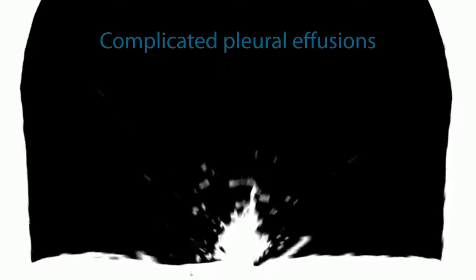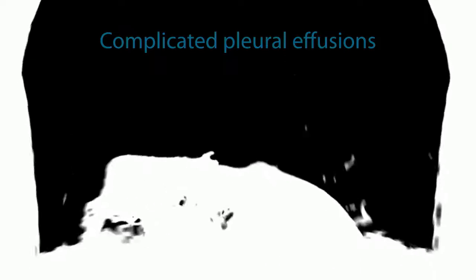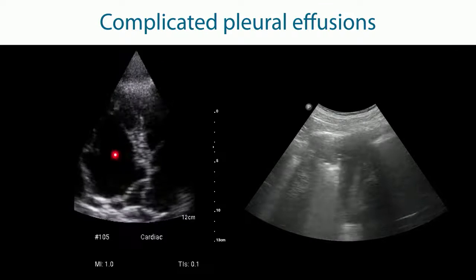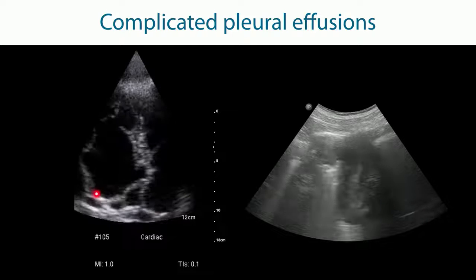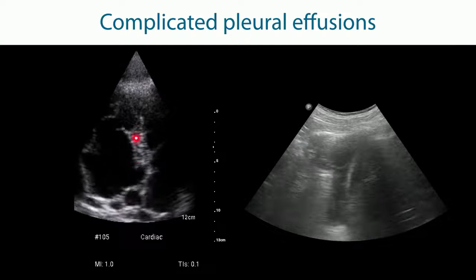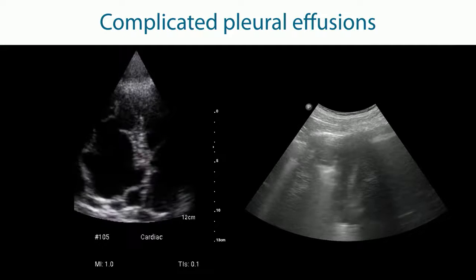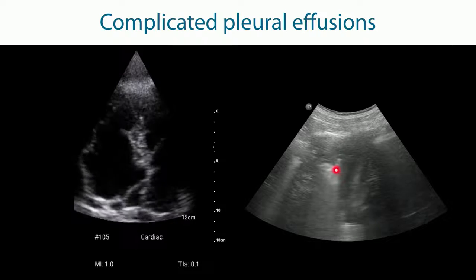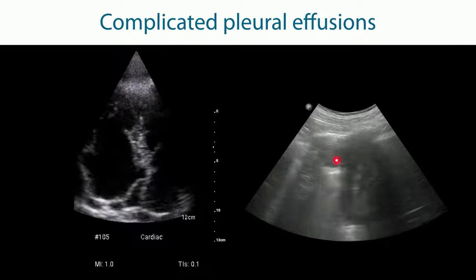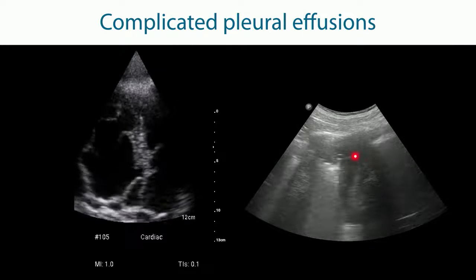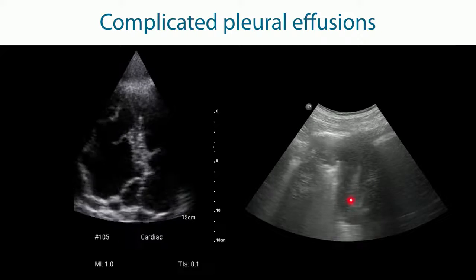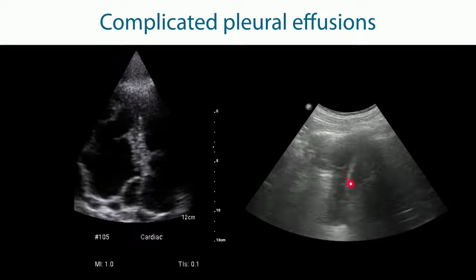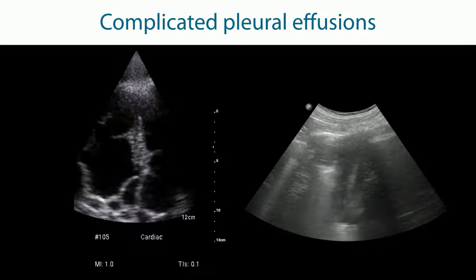In complicated pleural effusions we see, as we have seen in examples before, fibrinous structures. This was a pneumonia with a multi-resistant staph aureus. In this case it is more subtle. You have to pay close attention but this is also a complicated effusion. You see some fibrin fibers over here and also in the deeper areas and a consolidation over here. This as well is pneumonia.